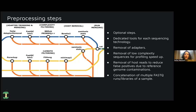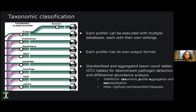The user can also choose to remove host reads using Bowtie2 aligner for short reads and Minimap2 for long reads. As the last preprocessing step, TaxProfiler allows concatenation of multiple FASTQ runs or libraries of a sample. The last step of TaxProfiler is, of course, taxonomic classification. Right now we support nine classifiers and profilers: Kraken2 paired with Bracken, KrakenUniq, MetaPhlAn3, MALT, DIAMOND, Centrifuge, Kaiju, and mOTUs.